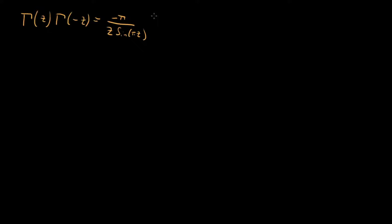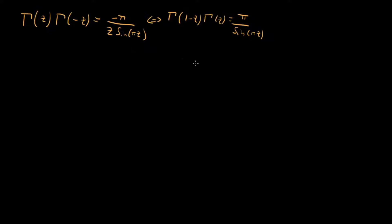There are also a couple other ways of writing this that are sometimes more useful, all based around using the recurrence property of the gamma function. Another way — probably one of the more common ways of writing this — is that gamma of 1 minus z times gamma of z is equal to pi divided by sine of pi z. This is just another way of writing this using the recurrence property, and it ends up being usually a little bit more useful, depending on the problem and what you're trying to do.